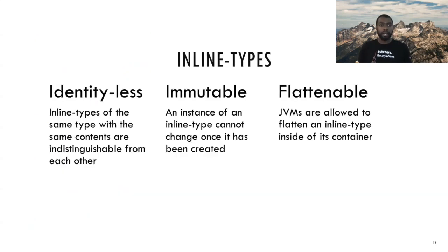Inline types have three main characteristics. The first one is that they're identityless. As we saw in the previous slides, identity is the reason why we have a lot of references today. But inline types are identityless, so a lot of those things we have to do to preserve identity, we don't have to do anymore. Identityless means that an instance of a type which has the same content is indistinguishable from all other instances of that type with the same content. So if the payload's the same, it's the same thing. Immutability means that an instance cannot change once it's been created. So once you create it, that's it forever. If you want it to change, you have to create a new instance. And flattenable means that the JVM is free to embed or inline a field within its container.